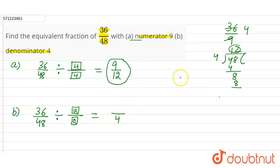12 into 3 is 36, so in the numerator 3. So the equivalent fraction when the denominator is 4 is 3 by 4.